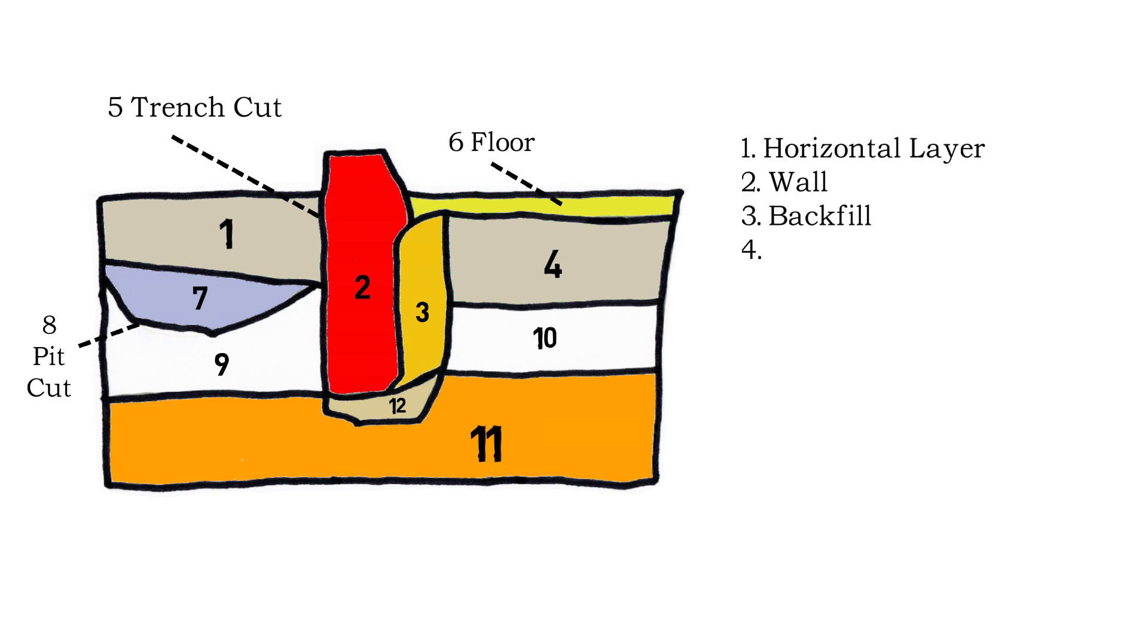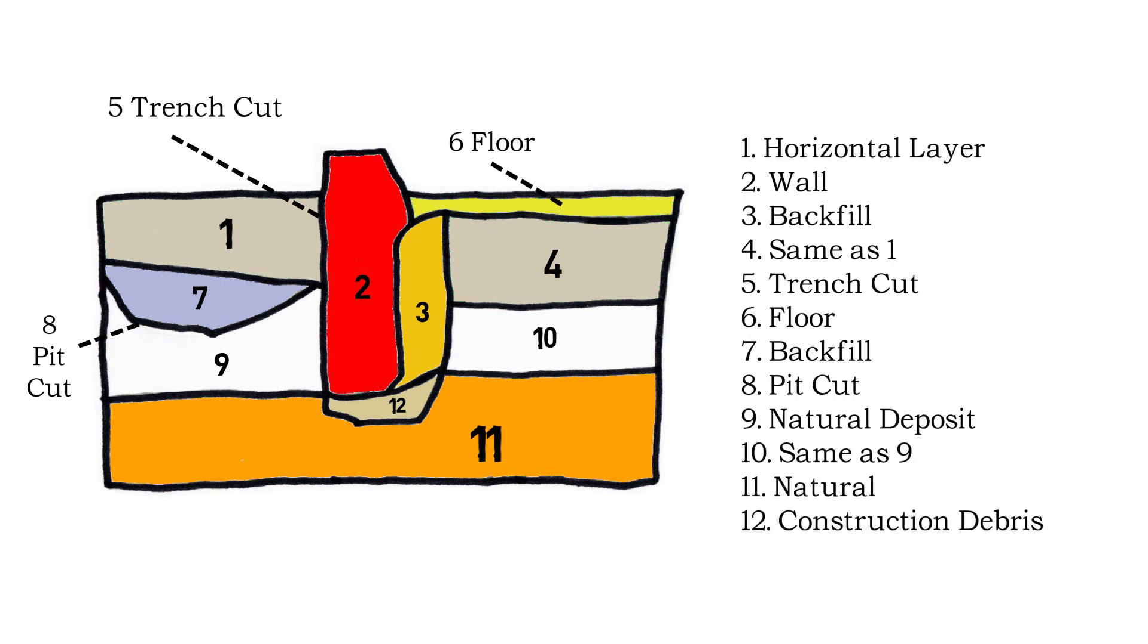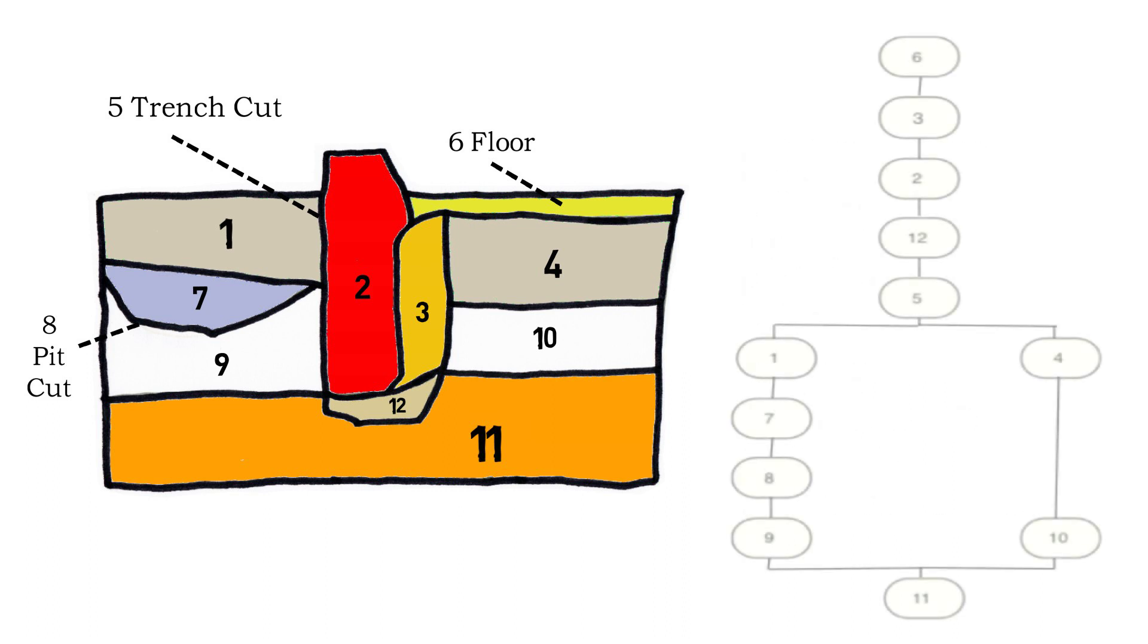This basic stratigraphic example of an archaeological site shows the different layers and their context. The Harris Matrix method can be used here to understand the site's chronology, by creating a flowchart and entering the different numbers of each layer, starting with the youngest at the top to the oldest at the bottom.